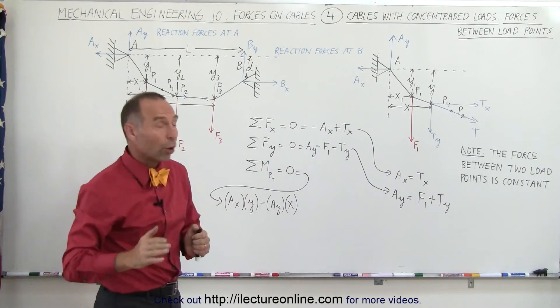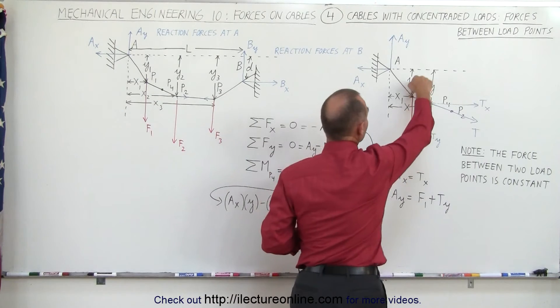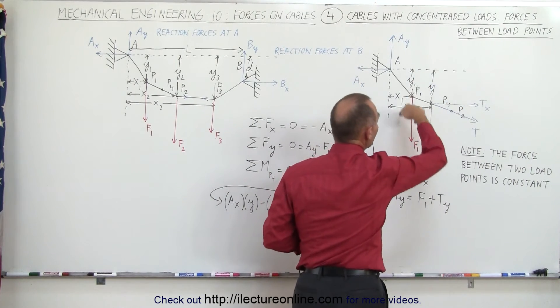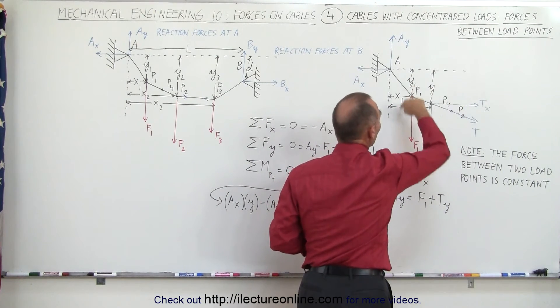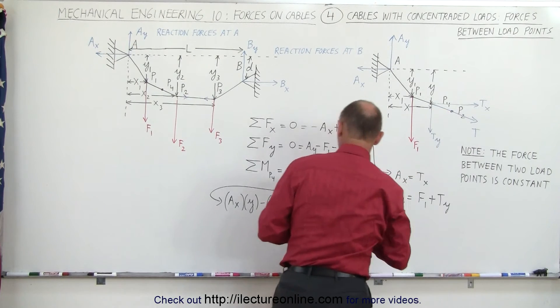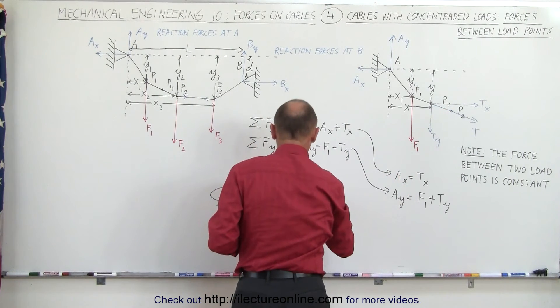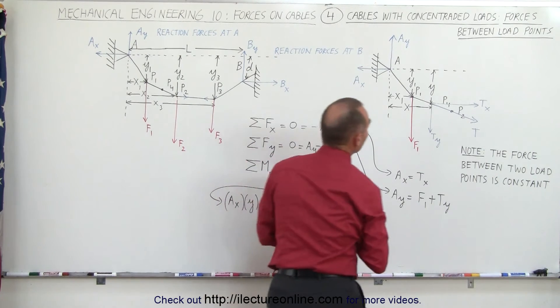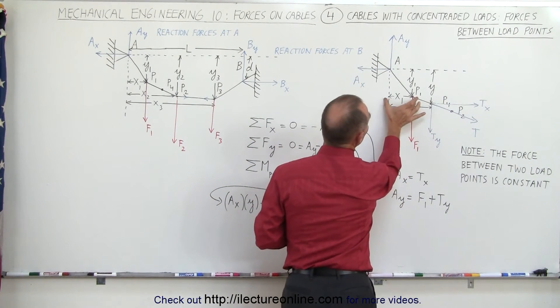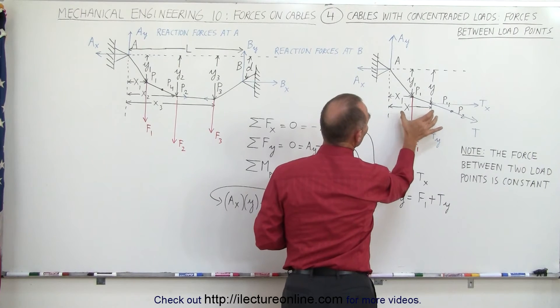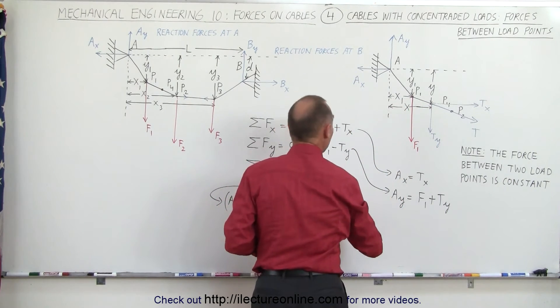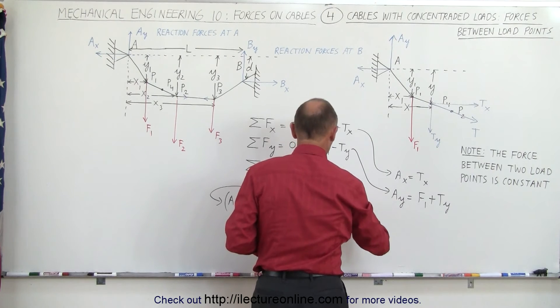Next, we want to consider the load force F1. It is pulling in this direction causing a counterclockwise torque about point P4. That means it is positive plus F1 in the distance. Well, notice that this distance is x1, this distance is x. So it would be x minus x1 gives us this distance right here. It would be x minus x1.